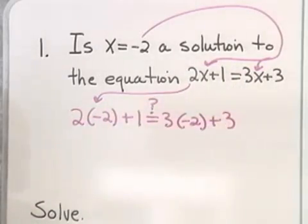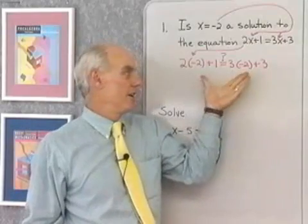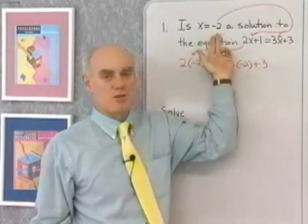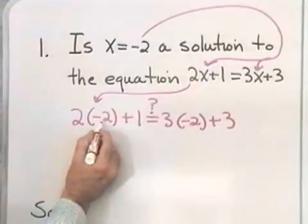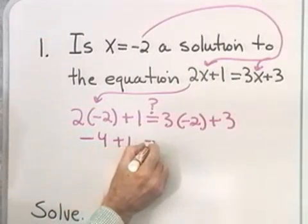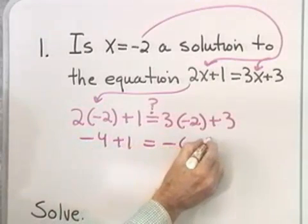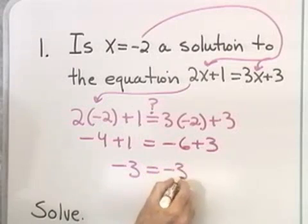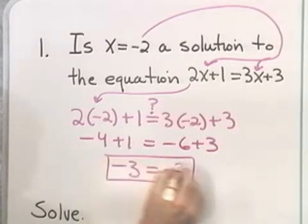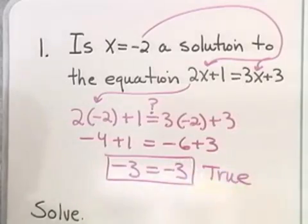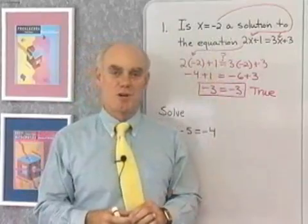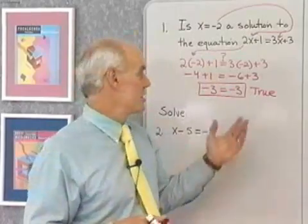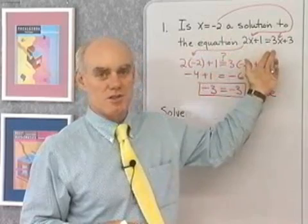I'll put a little question mark to ask myself: are these two numbers equal? If they are, then x equal negative 2 turns this equation into a true statement, meaning it is a solution. Let's check: 2 times negative 2 is negative 4 plus 1; 3 times negative 2 is negative 6 plus 3. Negative 4 plus 1 is negative 3; negative 6 plus 3 is negative 3. So I have a true statement, meaning x equal negative 2 is a solution. When we solve equations, we're looking for numbers to replace the variable with that turn the equation into a true statement. x equal negative 2 is the only solution to this equation.